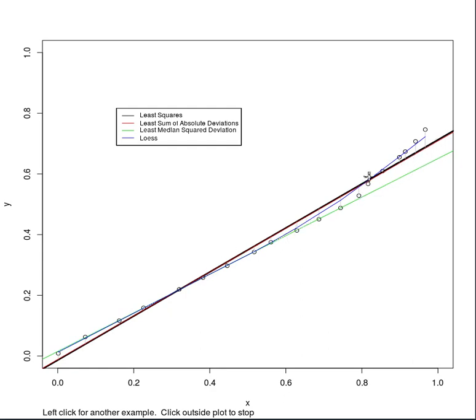And the red, there's a red in here you can barely see. The least sum of absolute deviations gave you really the same estimates.